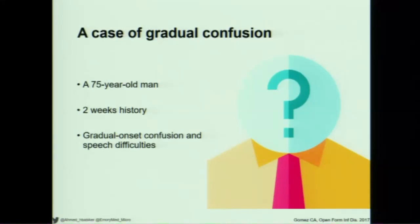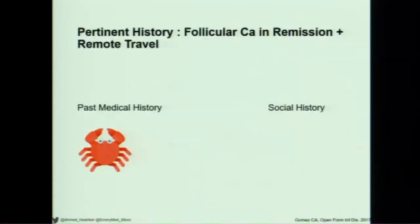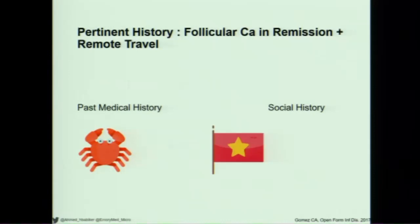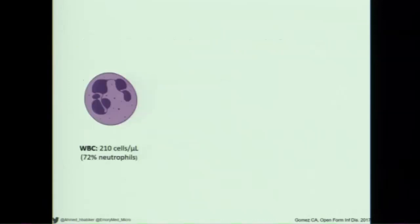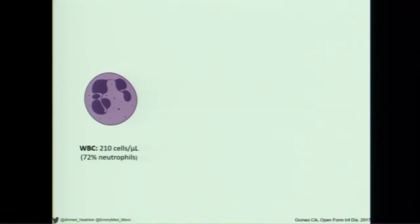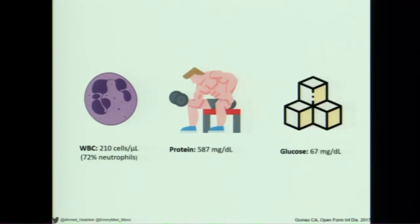This is a 75-year-old man who has a two-week history of gradual onset confusion and speech difficulties. His past medical history is pertinent for follicular lymphoma, status post a few rounds of chemotherapy, and he's on rituximab. He's originally from Vietnam but immigrated many years ago to California. On examination, he was disoriented to time and place with no focal neurological deficits. The MRI was within normal, but his CSF showed significant pleocytosis, predominantly neutrophils, with protein very elevated at 587, and glucose on the low side.